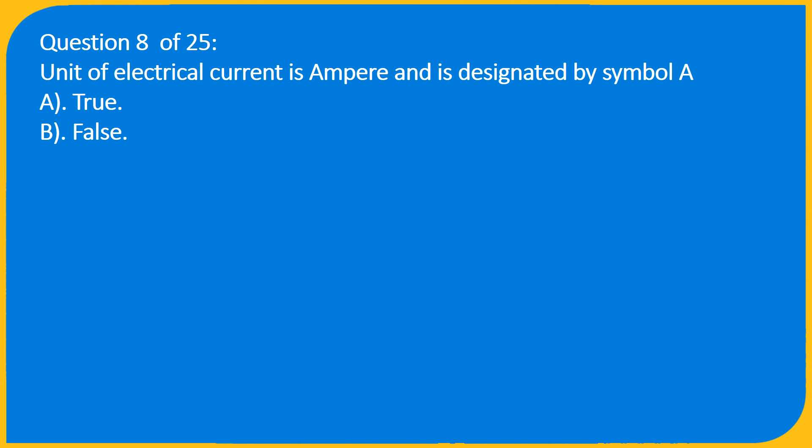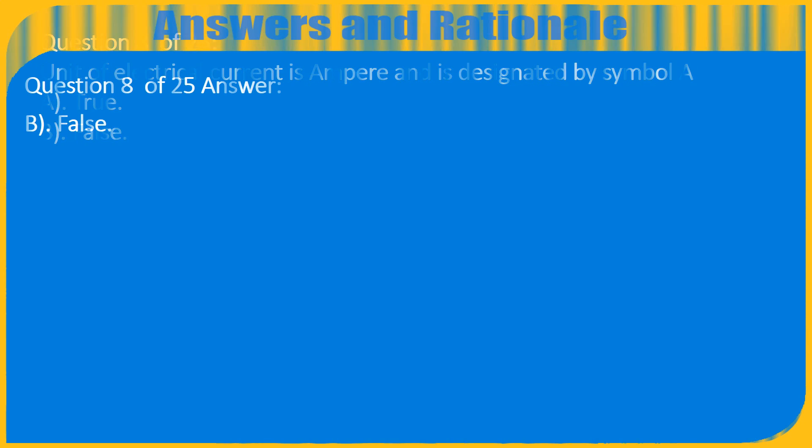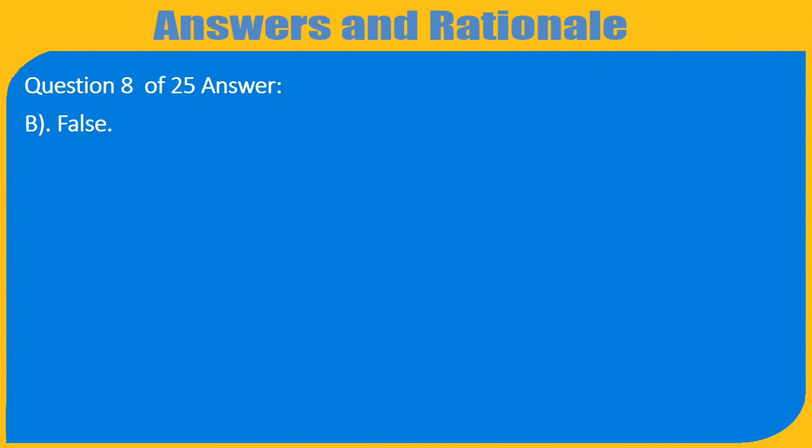Question 8 of 25: Unit of electrical current is Ampere and is designated by symbol A — A. True, B. False. Answer: B. False.